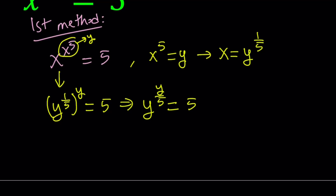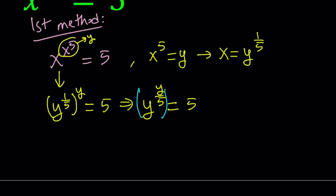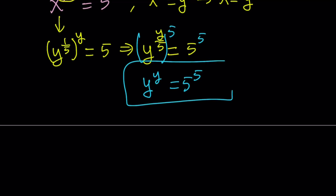Let's raise both sides to the 5th power. That gives us y to the power y equals 5 to the power 5. This is really good because we can make a one-to-one correspondence, but the question is: y equals 5 is a solution, but are there any other solutions?